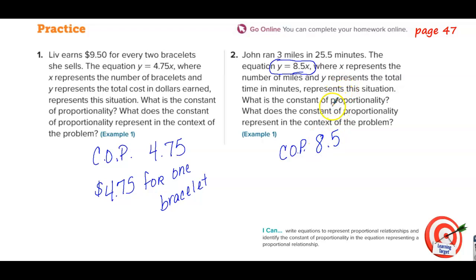And what does it represent? Well, if he can do three miles in 25.5 minutes, and y is the total time in minutes here, that means he's doing 8.5 minutes per mile. So he'll be doing 8.5 minutes per one mile.